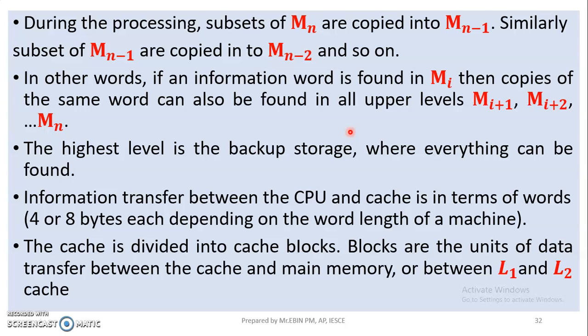There are levels of memory in the hierarchy: Level 0 is the register, Level 1 is the cache memory, Level 2 is the main memory, Level 3 is the hard disk, and Level 4 is the external memory.